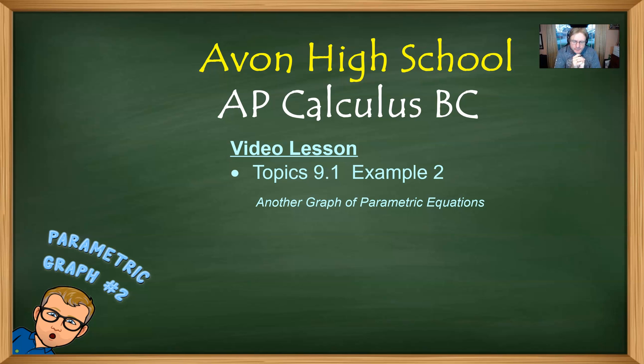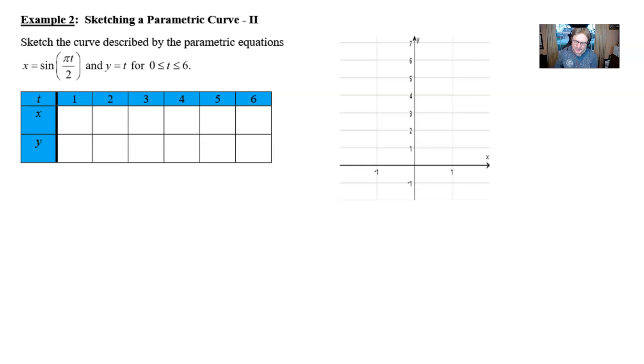We're going to take a look at another graph of this pair of parametric equations and see how neat sometimes these things can really come out to be. So here we go. Parametric equation number 2. It says that we want to sketch the graph described by these parametric equations. And so we have x is equal to sine of pi t over 2 and y is equal to t.